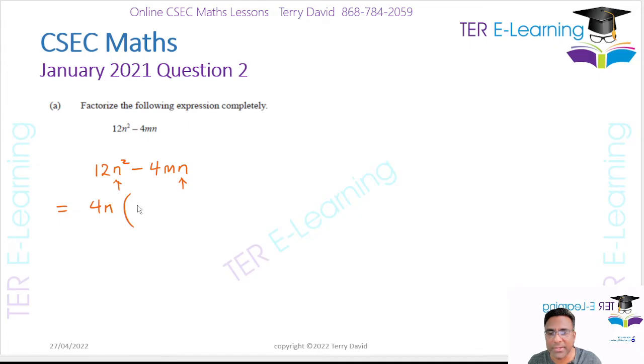And this is going to be, you have to ask yourself, what multiplied by 4 will give me 12? 4 by 3 will give me 12. What multiplied by n will give me n²? This has to be n, and you put back your minus sign, and the only thing missing here is for us to put an m here. So this is my answer.